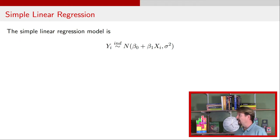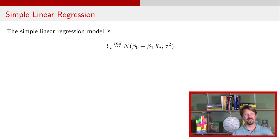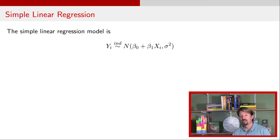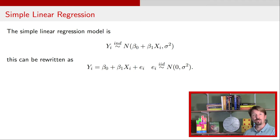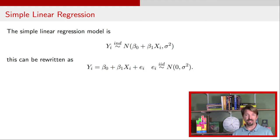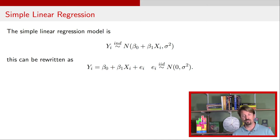As a reminder, we have our simple linear regression model. We have a response variable y. The responses are independent, normally distributed, with a mean that's beta-0 plus beta-1 times x-i, the explanatory variable for the i-th observation, with a common variance sigma squared. It's helpful to rewrite this model by pulling out that mean, so that y-i equals beta-0 plus beta-1 times x-i plus a new term e-i. These errors e-i are iid normally distributed with a mean of 0 and a variance of sigma squared.